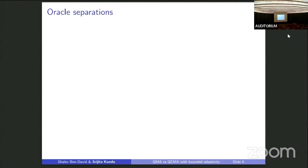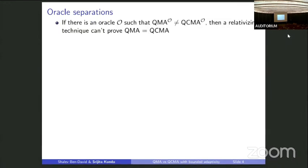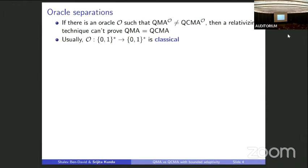Given this question, the first thing a complexity theorist would do is try to separate the classes with respect to an oracle. If you can separate QMA and QCMA with respect to an oracle, that means a relativizing proof technique — a proof technique that works fine if you introduce an oracle — cannot prove that QMA is equal to QCMA. Usually when we talk about an oracle separation, the oracle is classical: a long classical string that can be an arbitrarily complicated function that the BQP algorithm can query with unit cost.